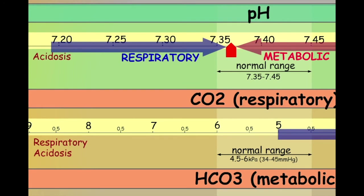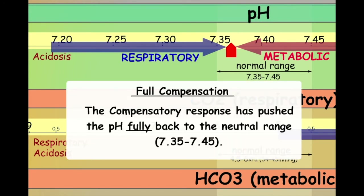The net result is a blood pH that is neutral. We would describe this example as a fully compensated metabolic acidosis — fully compensated because the alkalosis produced by the respiratory system has fully compensated for the acidosis resulting from the metabolic system.